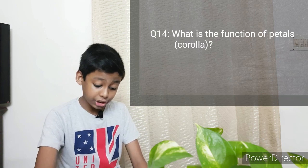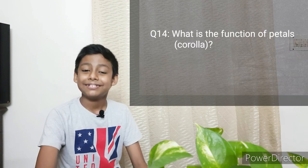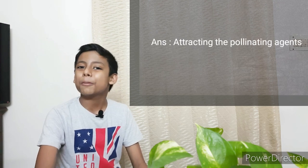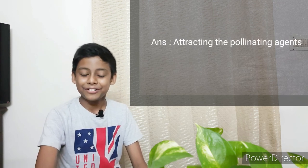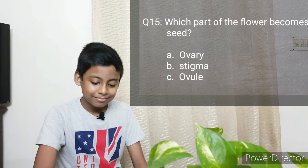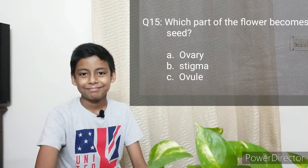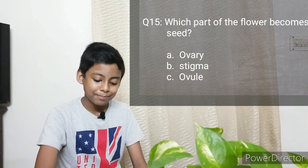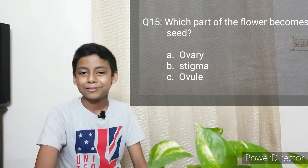The next question is: What is the function of petals? The answer is: Attracting the pollinating agents. Which part of the flower becomes a seed? Options: Ovary, Stigma, Ovule. The answer is Ovule.